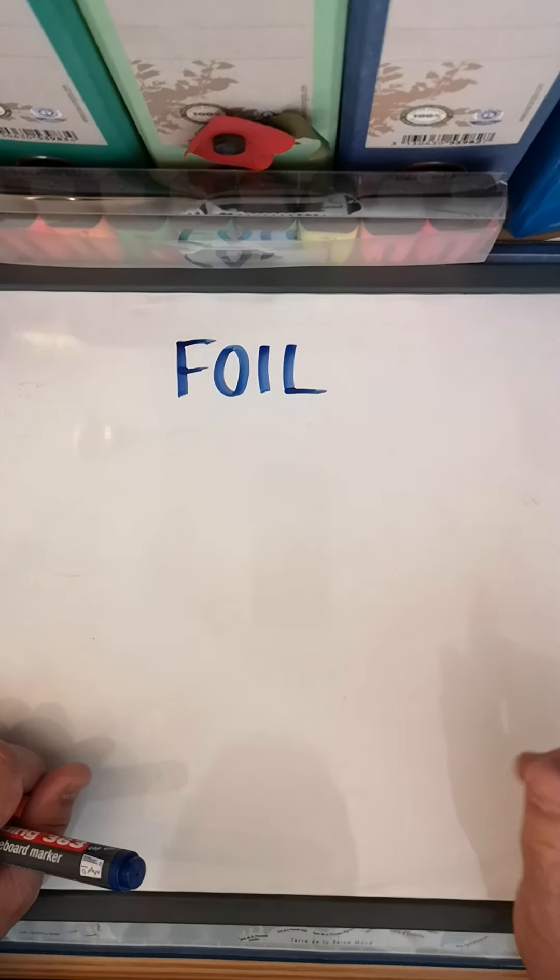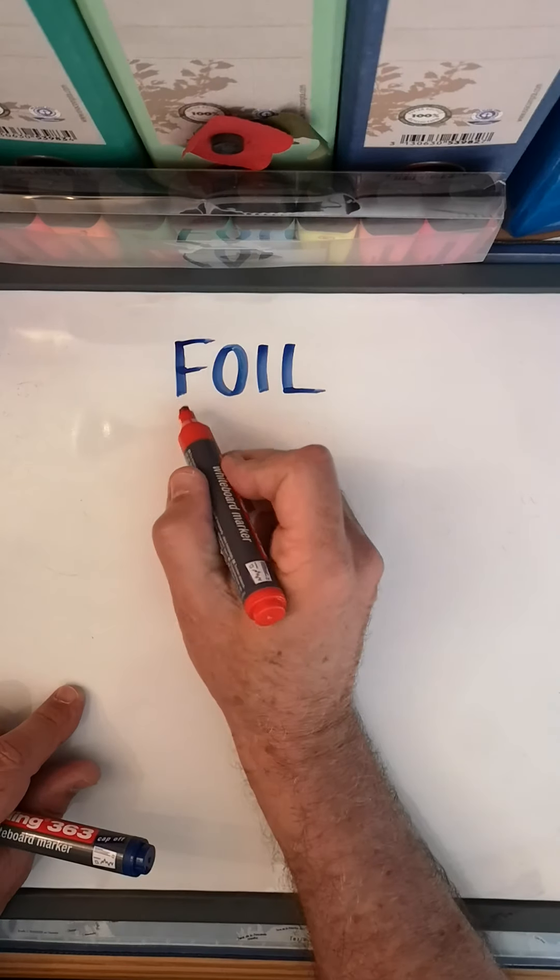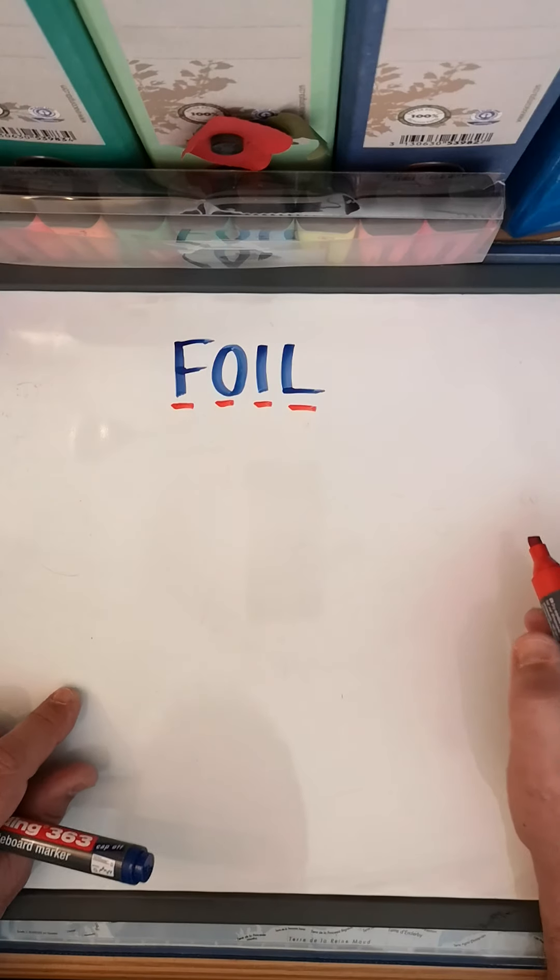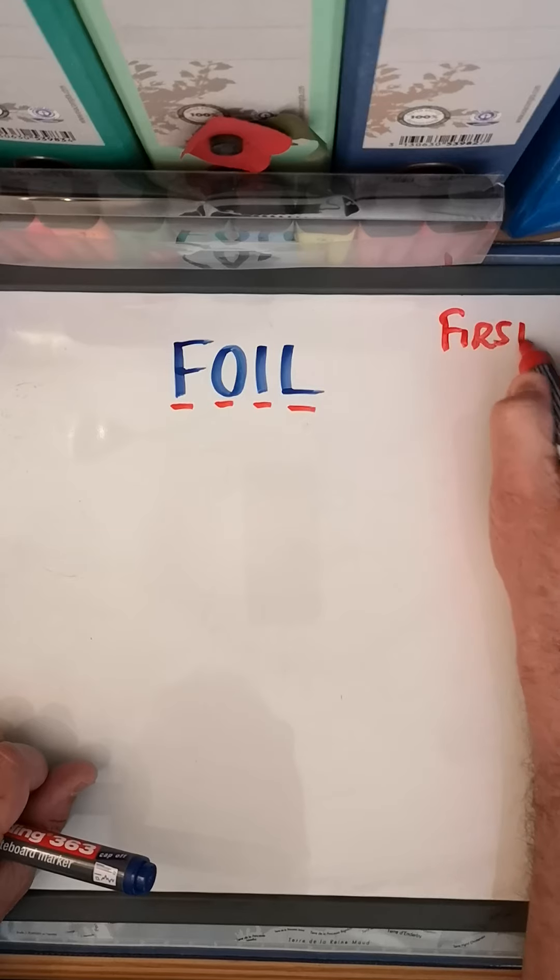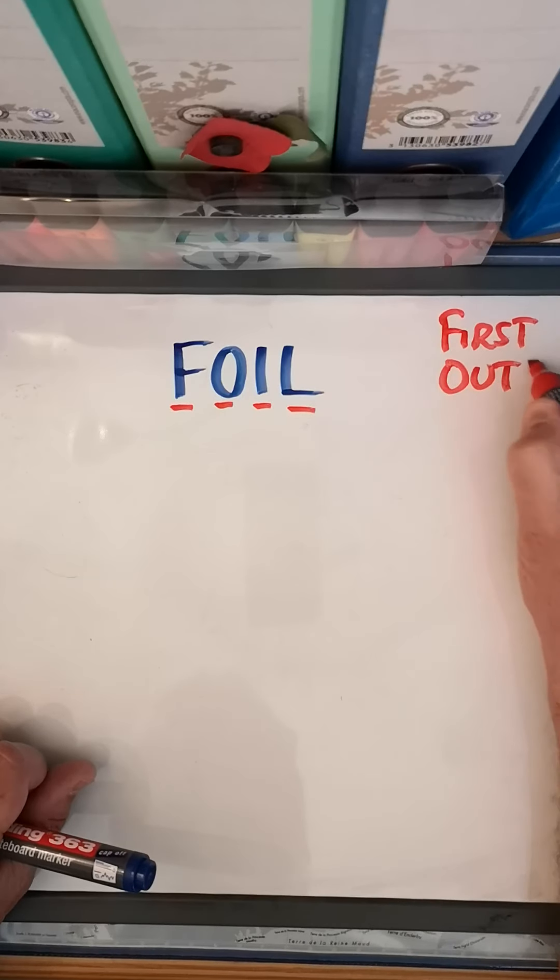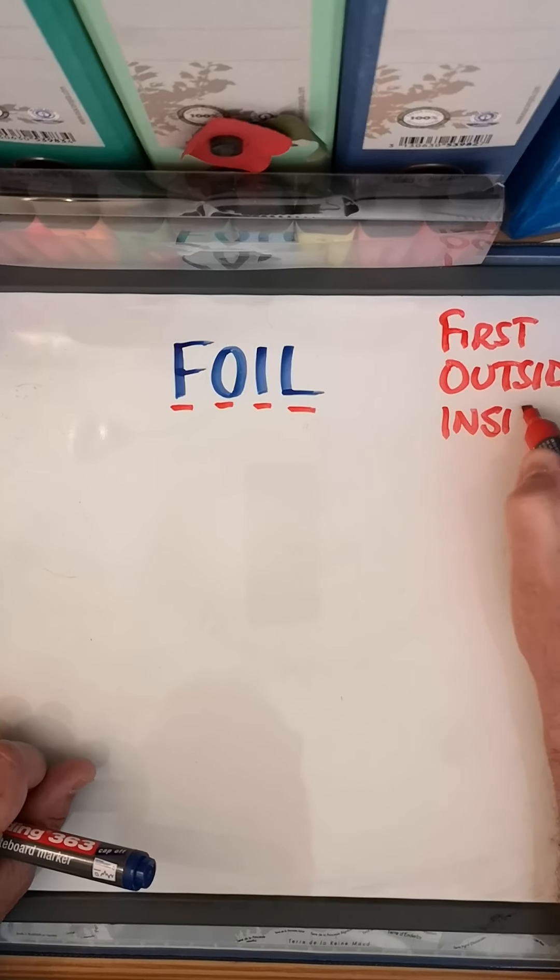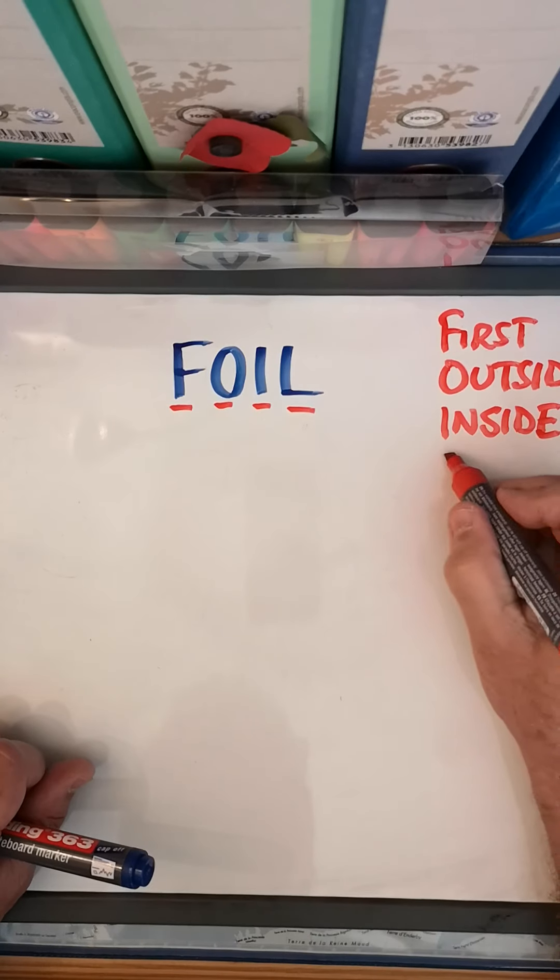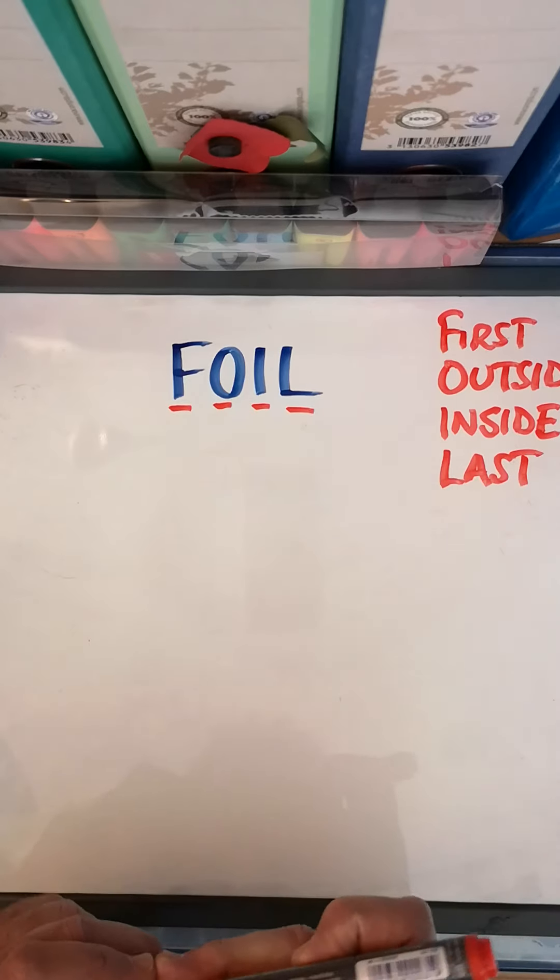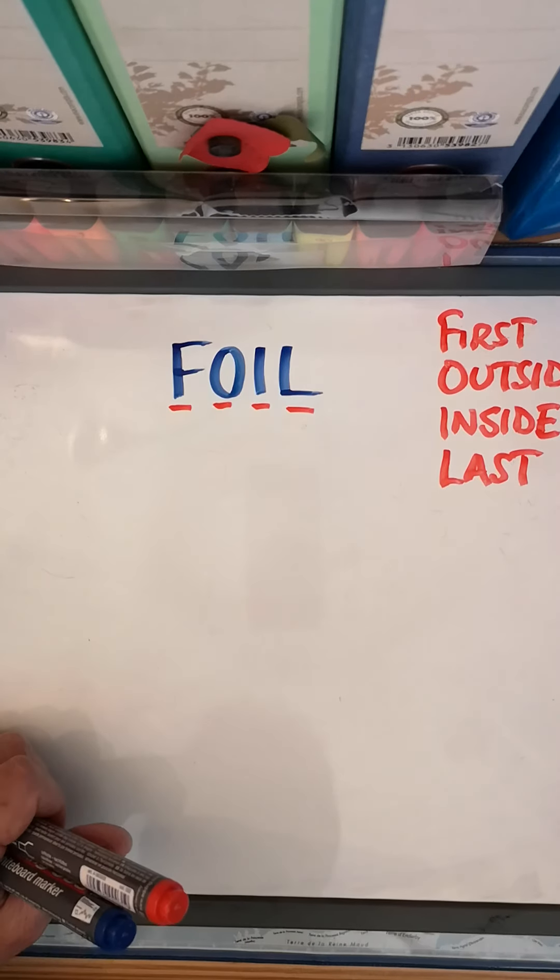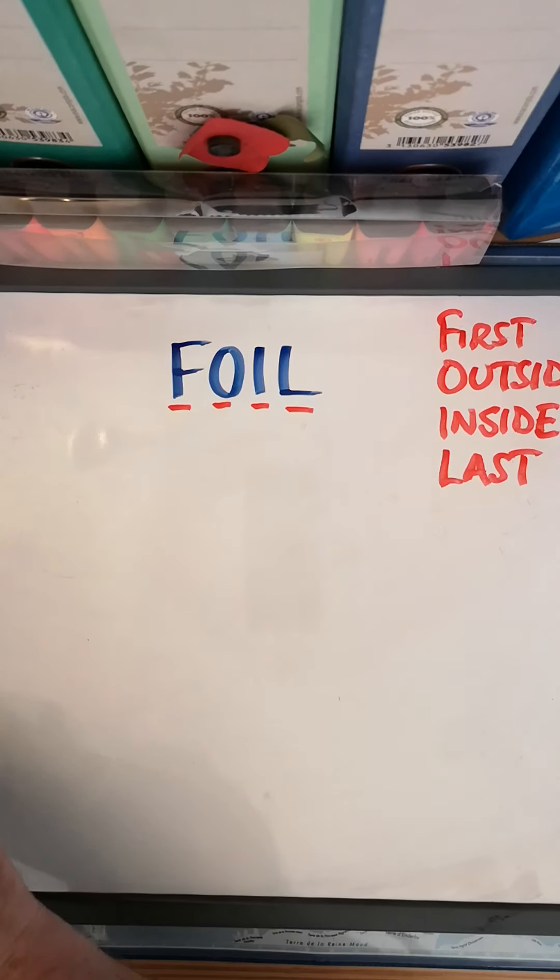Let's get back to FOIL. What does FOIL stand for? When we're multiplying two sets of brackets, we use FOIL to help us. The F stands for first, the O stands for outside, the I is the inside, and the L is for last. So FOIL: first, outside, inside, and last.